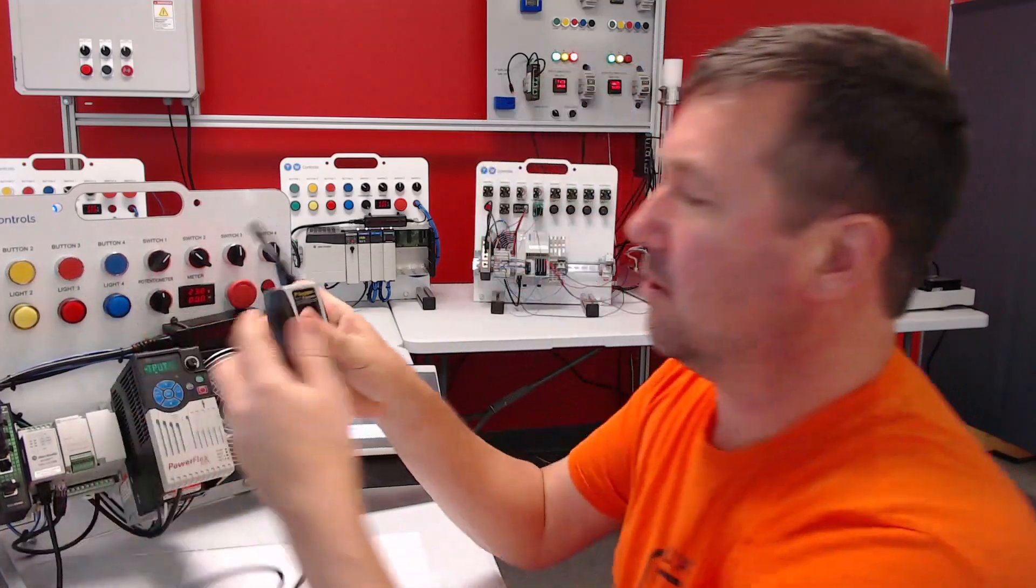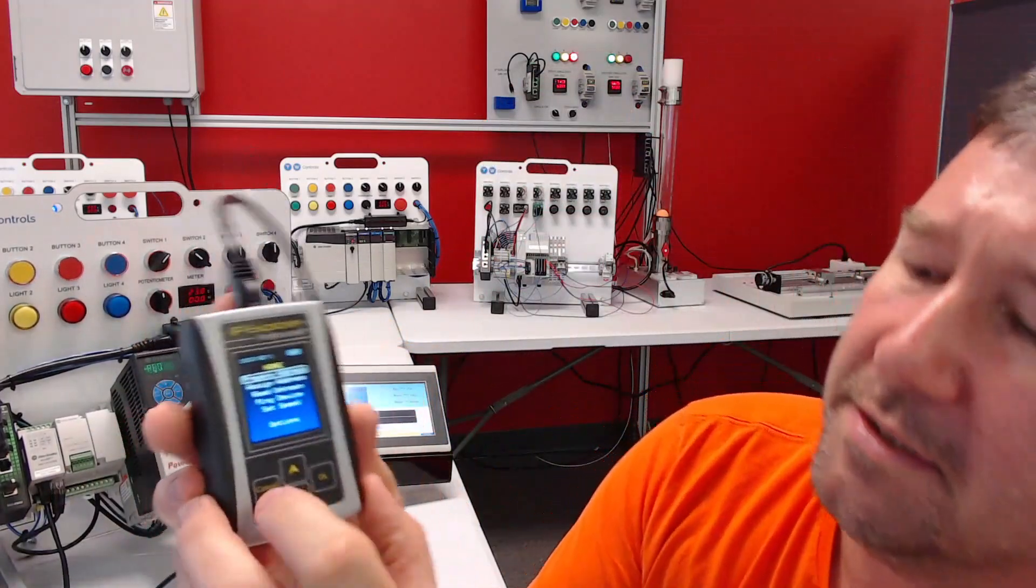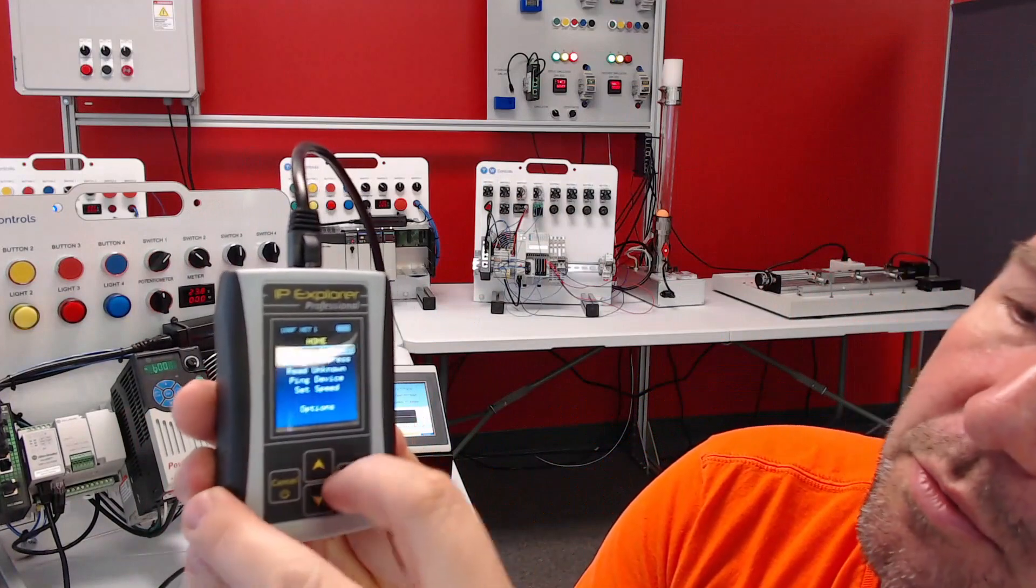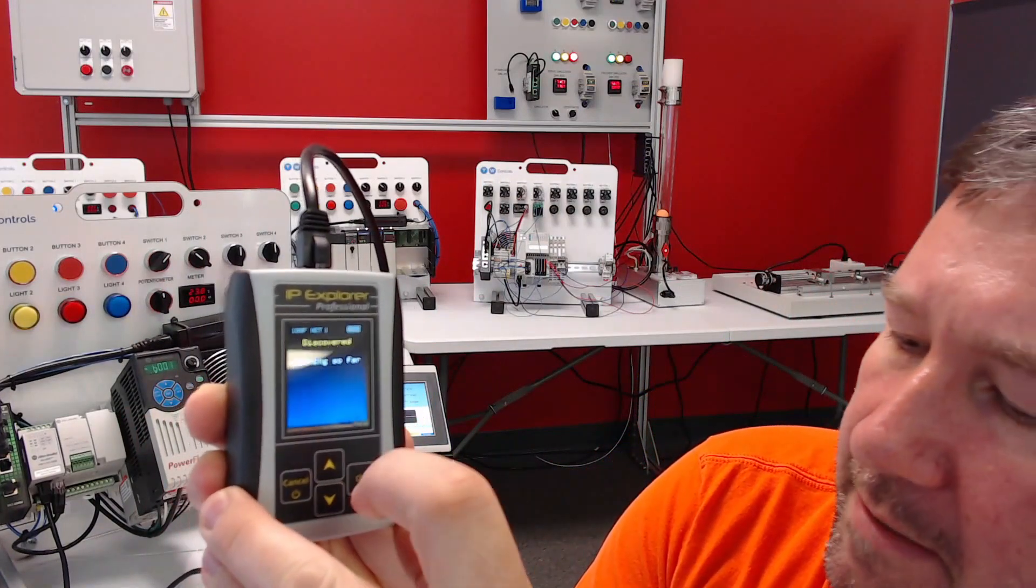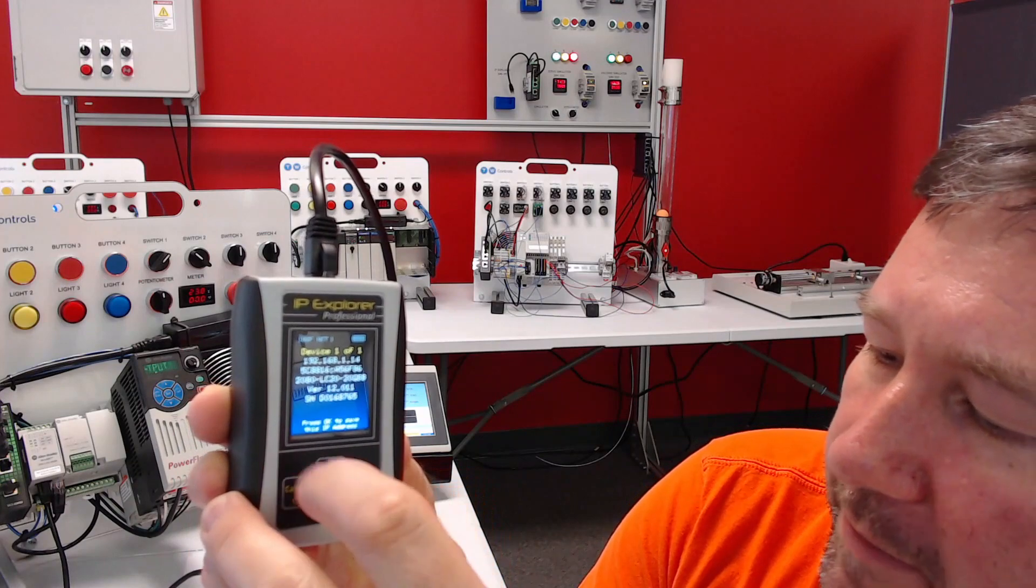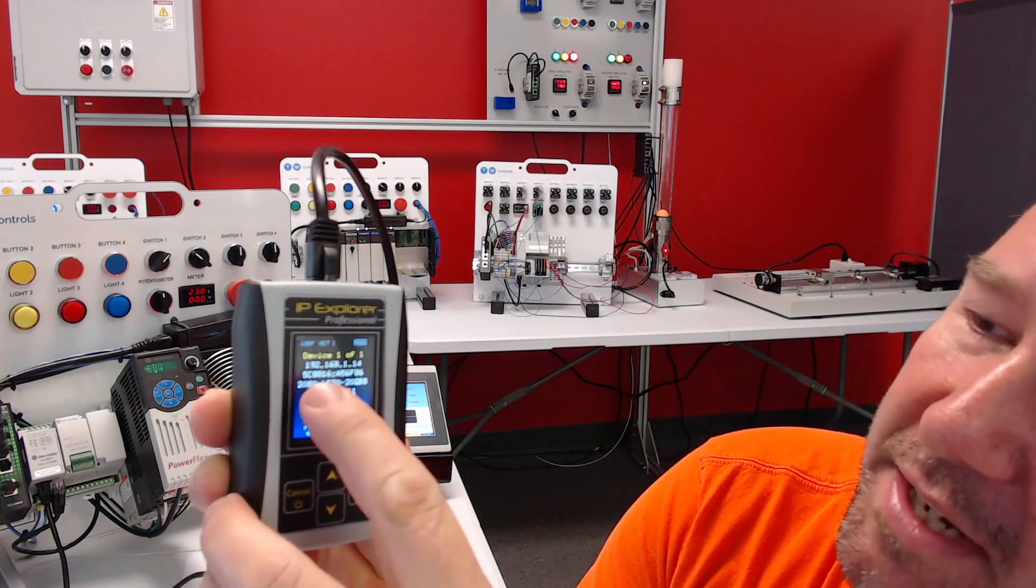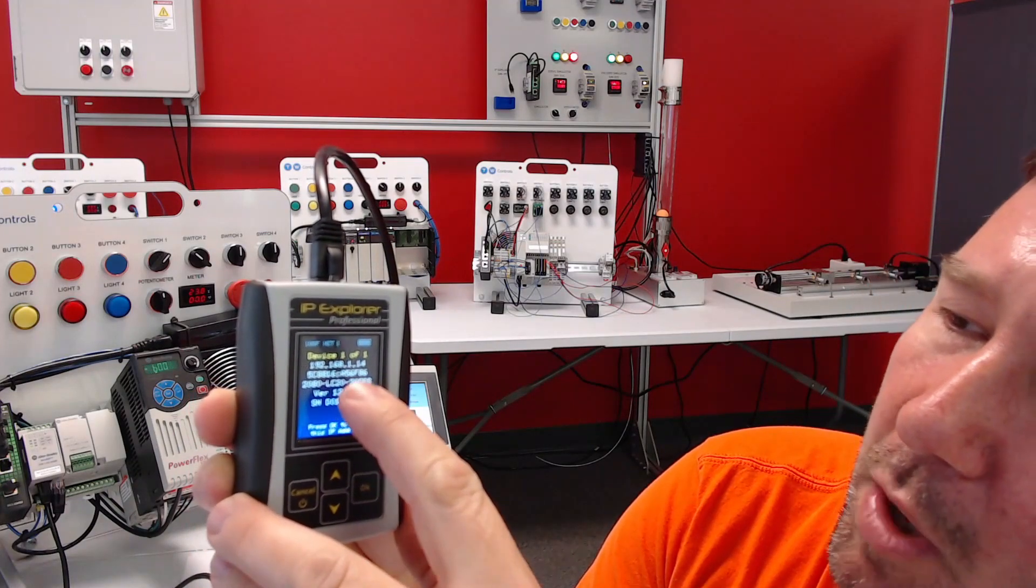So I am going to go to Read Unknown IP and we can see that its IP address is 192.168.1.14.